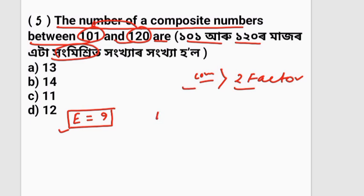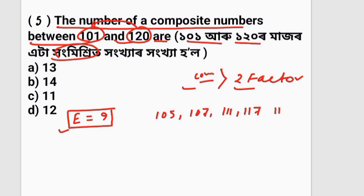The prime numbers between 101 and 120 are: 101, 103, 107, 109, 113, and 119 — wait, checking: 101, 107, 109, 113, and 119 is 7×17, so composite. The count of composite numbers in this range is determined by subtracting the primes from the total count.